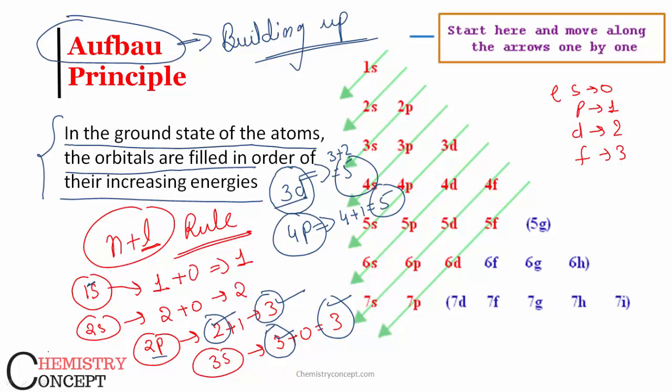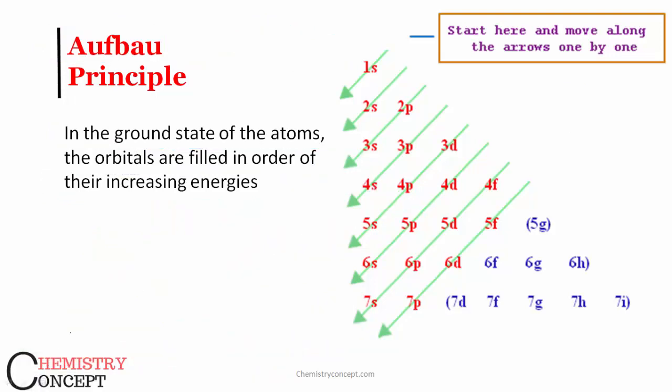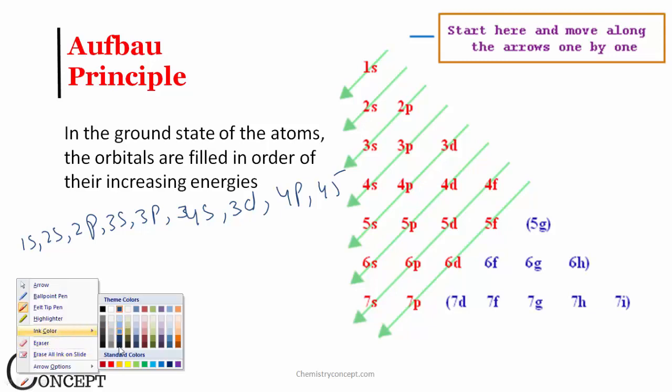Apart from this, this is the way the sequence is created: 1s, then 2s, then 2p, then 3s, then 3p, then after 3p there is 4s and then only 3d. Then comes 4p and then 5s. There is one thing to notice here.